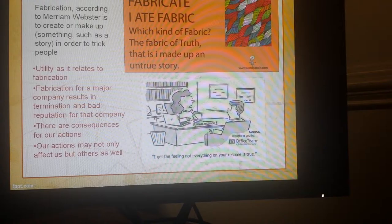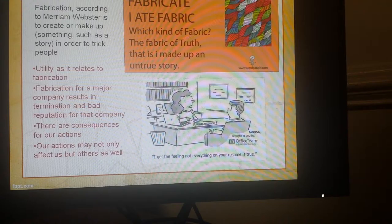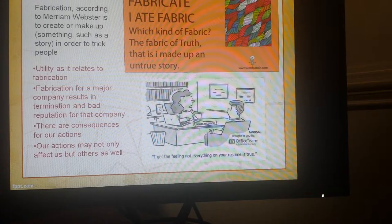The principle of utility as it relates to fabrication. According to Merriam-Webster, fabrication is to create or make up something, such as a story, in order to trick people. Tied together, fabrication and utility: fabricating sources, especially for a major publishing company, can result in termination and a bad reputation for the publishing company, which is the reverse of happiness that Mill talked about. It also shows how there are consequences for our actions and how our actions may not only affect us, but others as well.